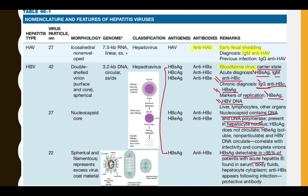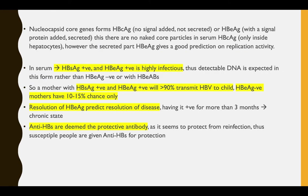In HBV, you have three forms: the complete virion form, the core-only form, or just excess surface antigen. Regarding infectivity: if you have surface antigen positive and E antigen positive, the virus is highly replicative, reaching full virion forms. If surface antigen is positive but E antigen is negative, this is less infectious. So a mother who is surface and E antigen positive would be more likely to transmit than one who is surface positive but E negative.